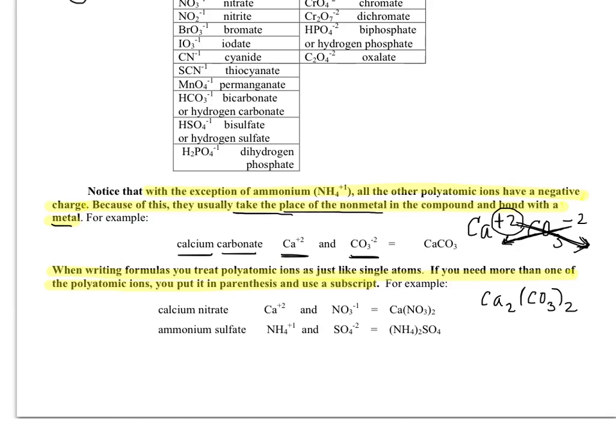The mistake a lot of people make is they think that that three is going to disappear. But that three is part of what carbonate is, so it can never go away. It's saying that every carbonate is made of one carbon and three oxygens. When you bring the two down, what the two is saying is that we're going to have two of those carbonate groups.